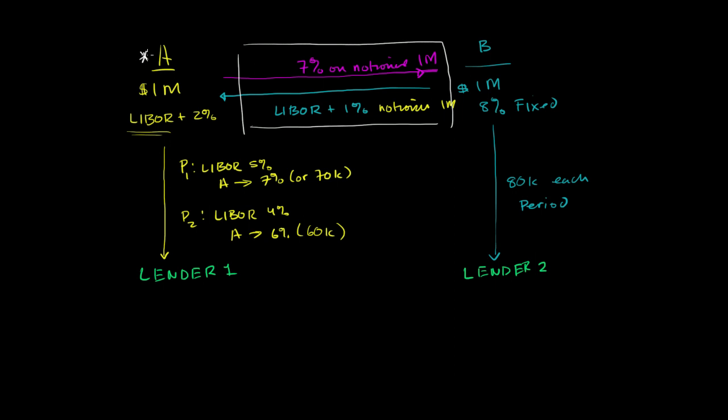In the last video, Company A took out a $1 million loan from Lender 1 at a variable interest rate, and Company B took out a fixed rate $1 million loan from Lender 2.